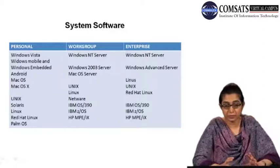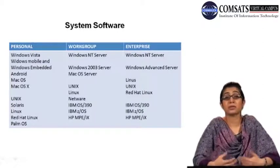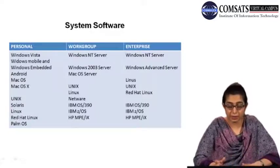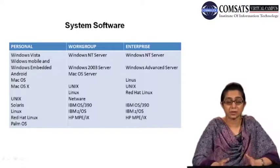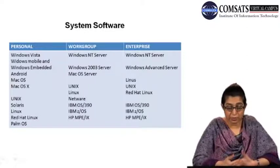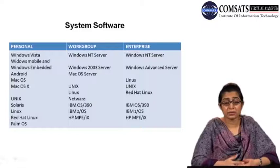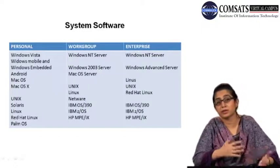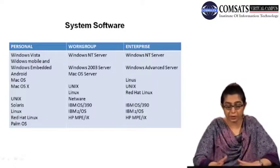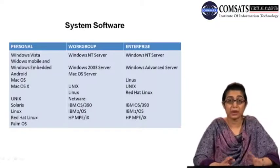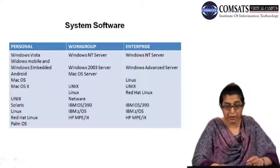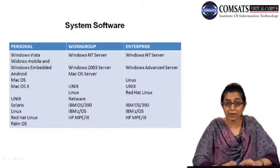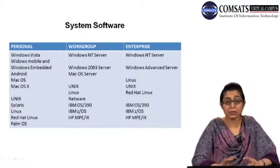These provide much stronger network capabilities and are used to run networks and perform critical business tasks. For workgroup, there are special-purpose operating systems such as Windows NT Server. Then you have Windows 2003 Server, which was taken over by the Windows Advanced Server Limited Edition — a 64-bit version of the Windows server family — and it competes with rival Linux running on Itanium processors.